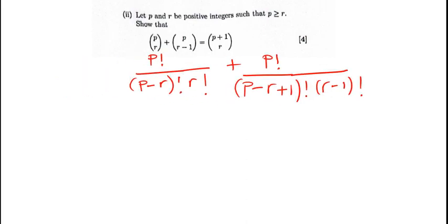We know this should be equal to the right hand side. We are supposed to get to a point where we have the two combined, implying that we should come up with a common denominator.